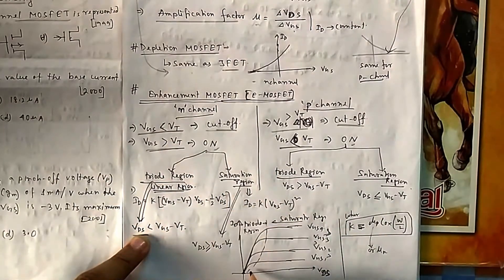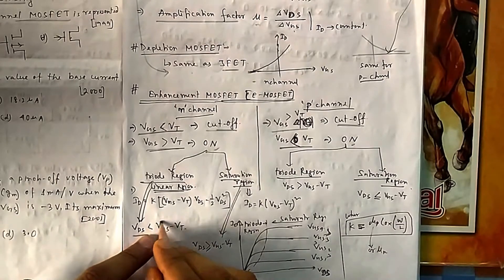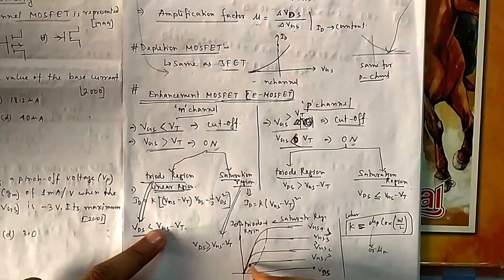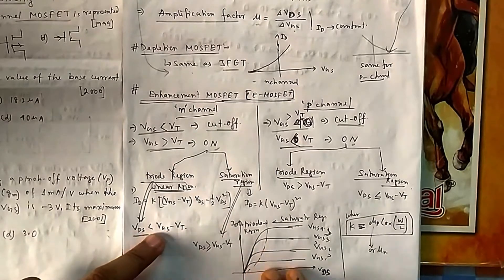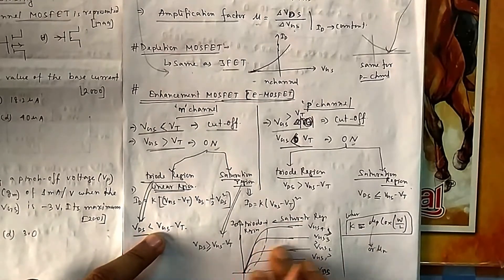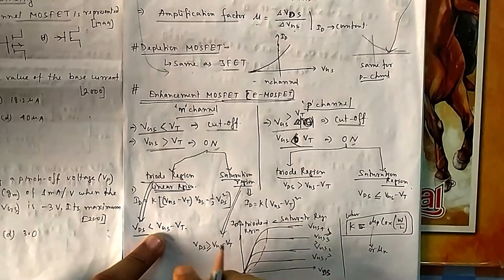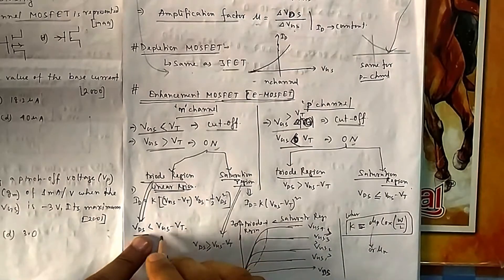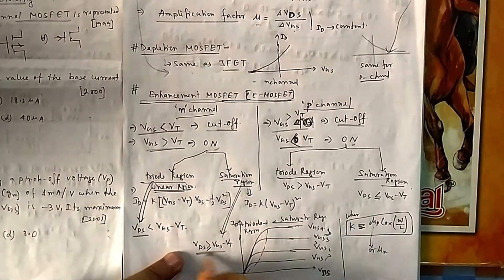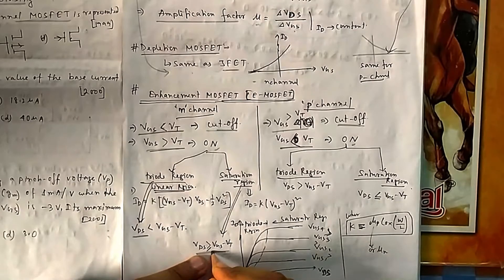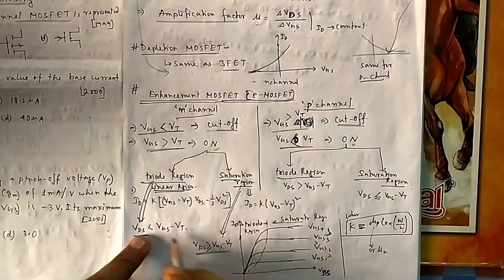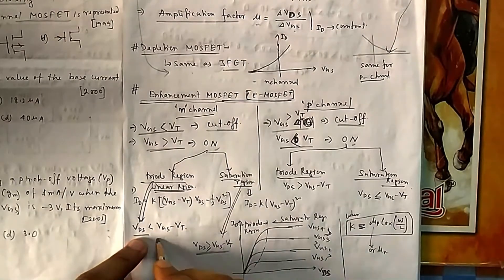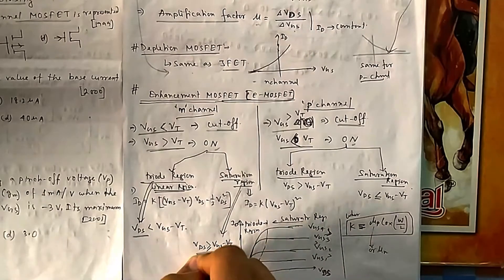If V_DS is below the boundary, the device is in the triode region; once you cross the boundary, it enters saturation and further increases in V_DS produce no increase in I_D. For saturation, V_DS must be greater than or equal to the boundary value; less than that is triode region.